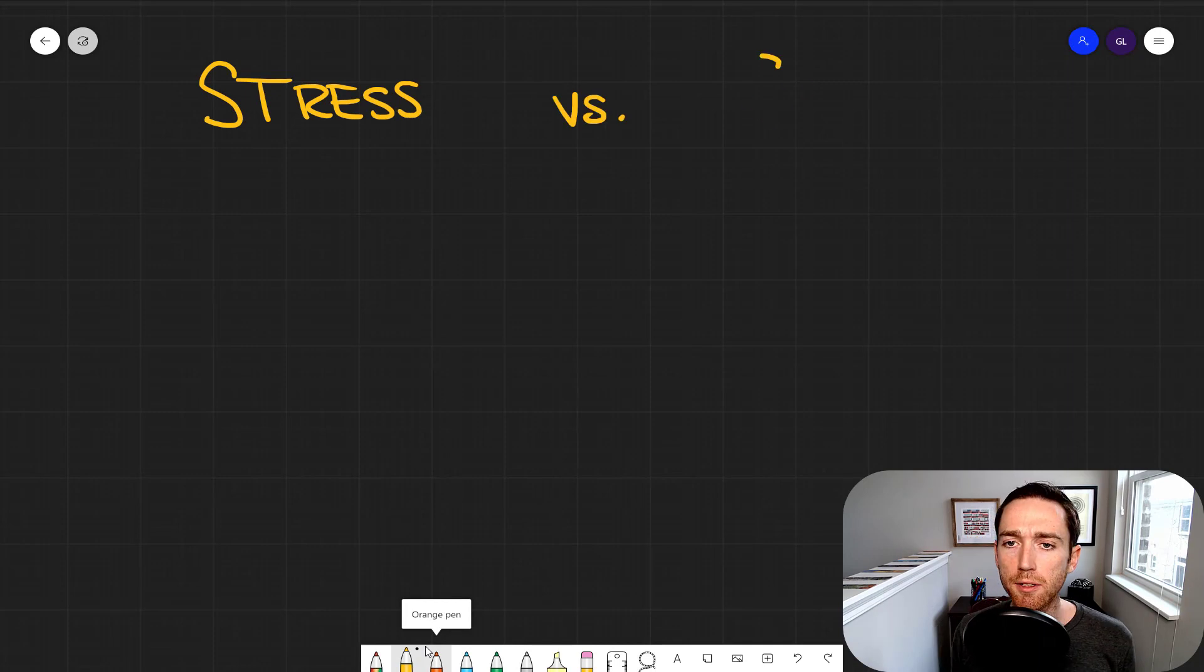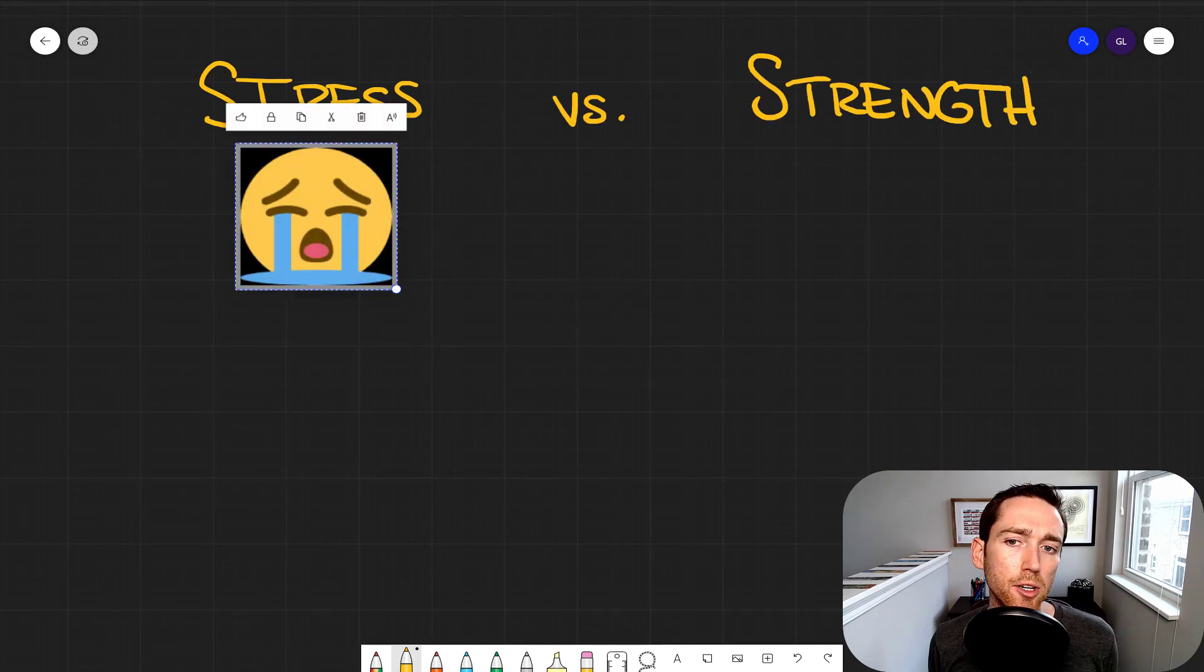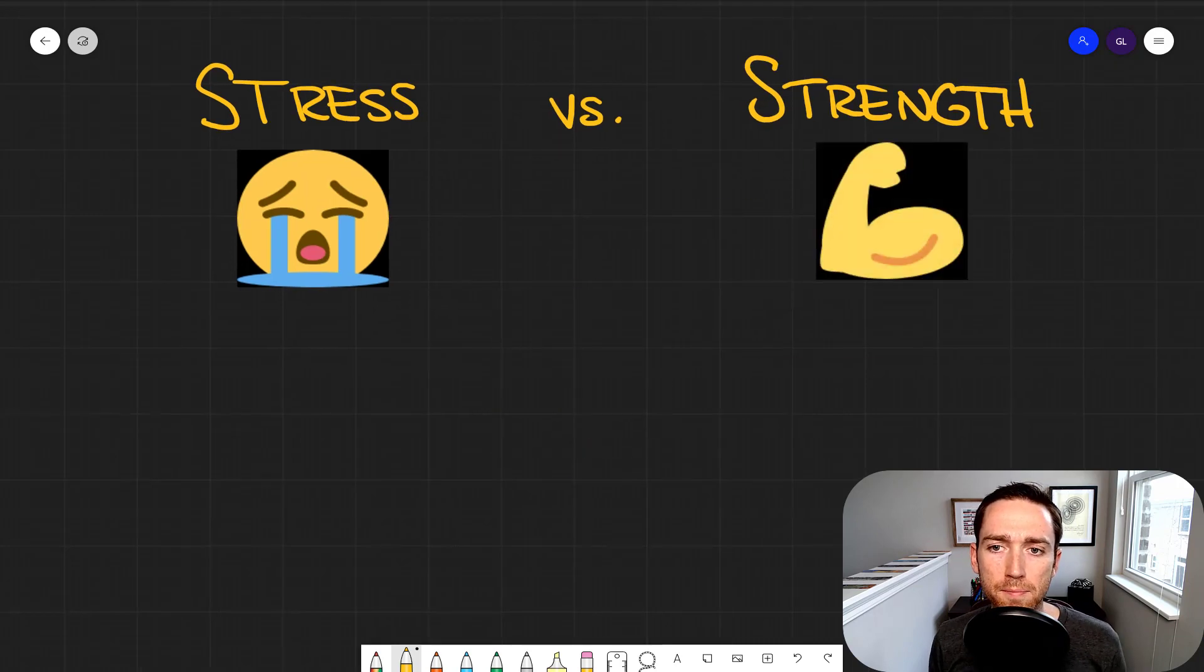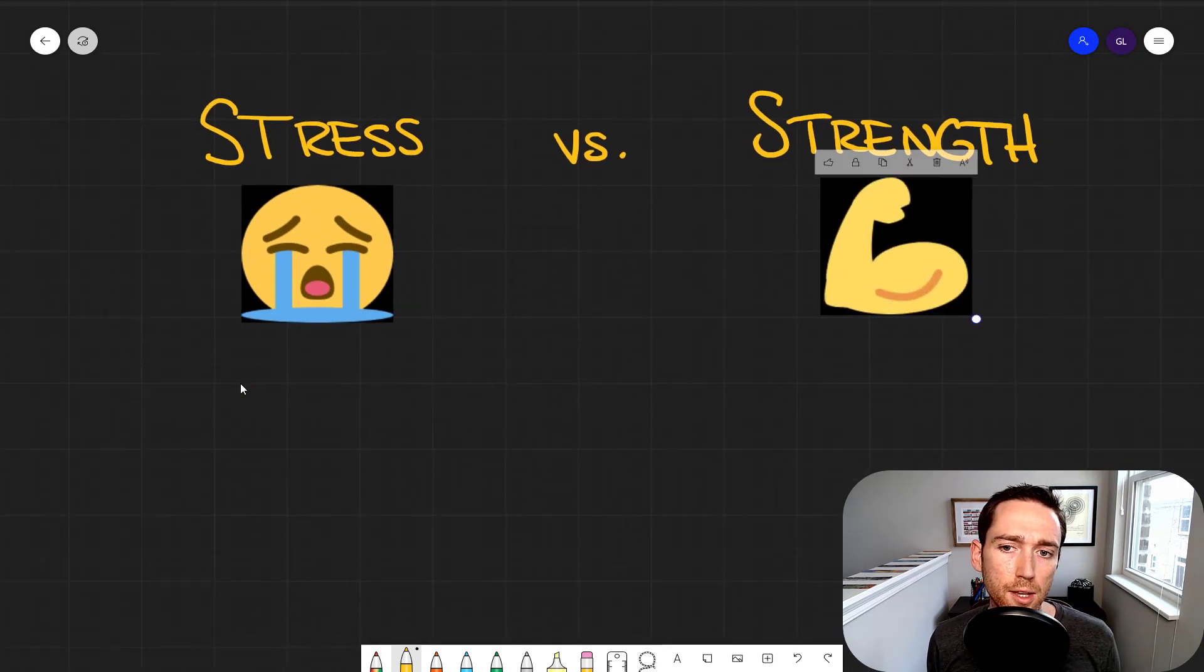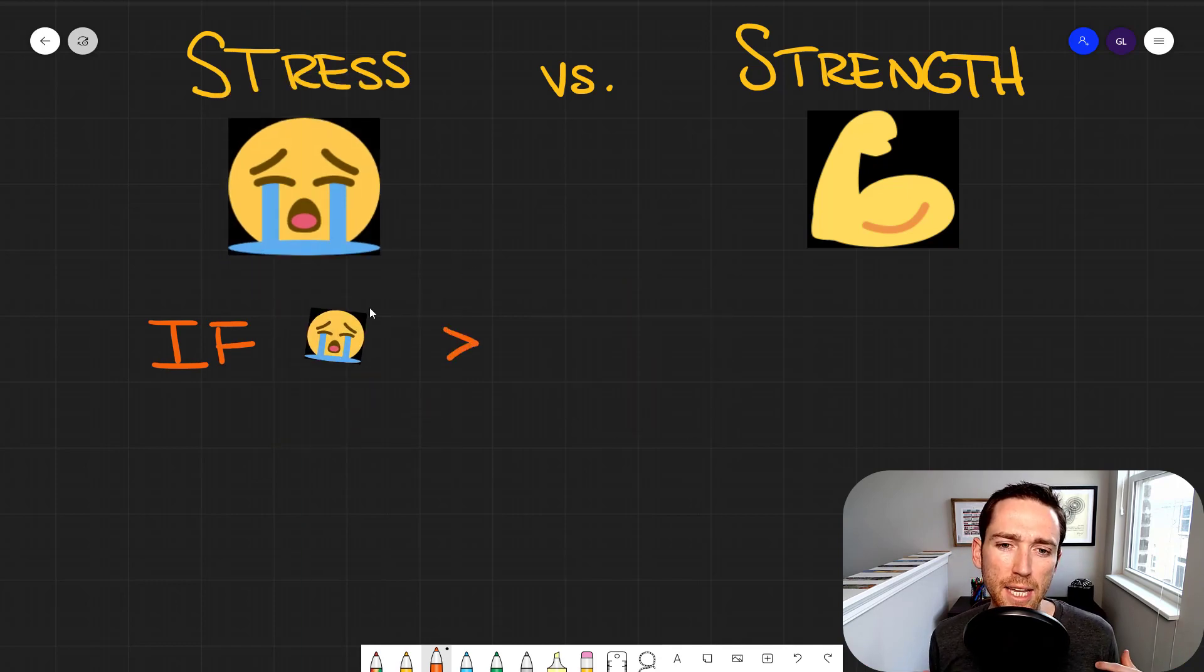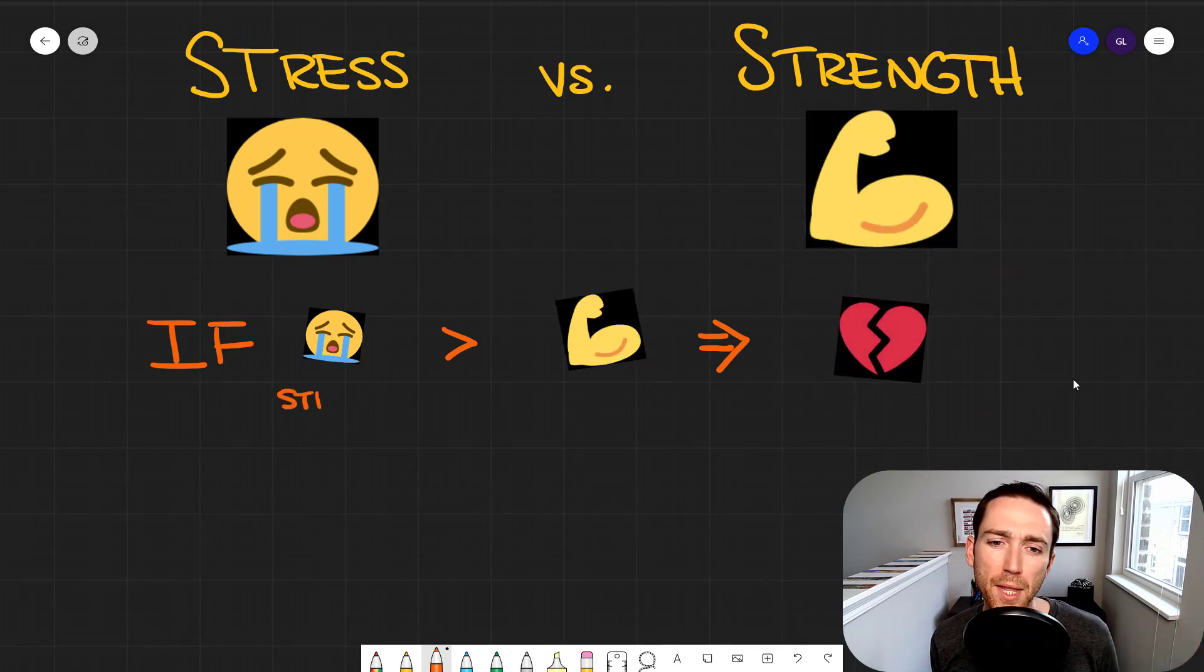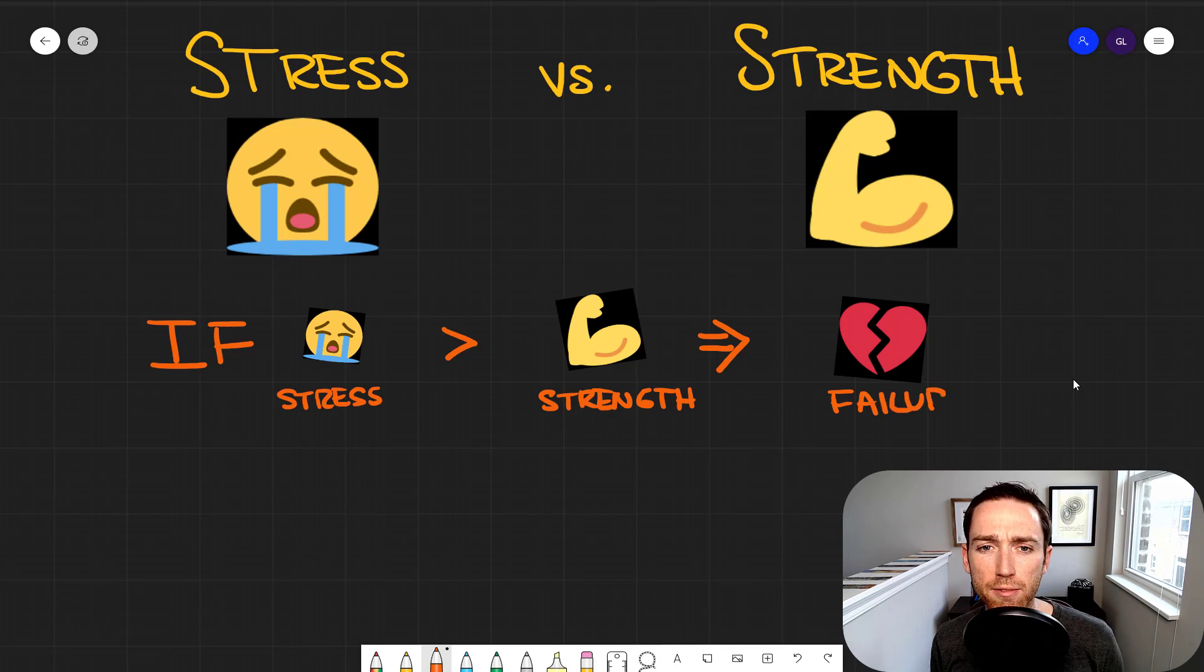Oftentimes the failure or survival of our part and our entire design depends on the strength of the design. In contrast, the stress of the design, if that actually goes above the total potential strength of our design, that's where stuff breaks. That's where we get failures.